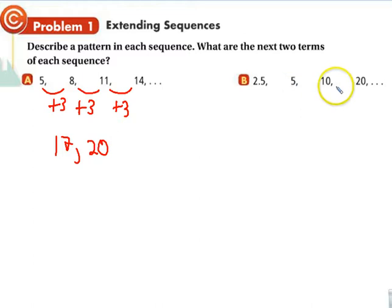What do we see happening here? We see times two. So then we would get 40 and 80. This one's just straight up. What's happening?